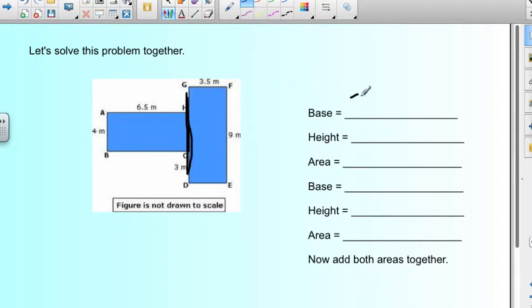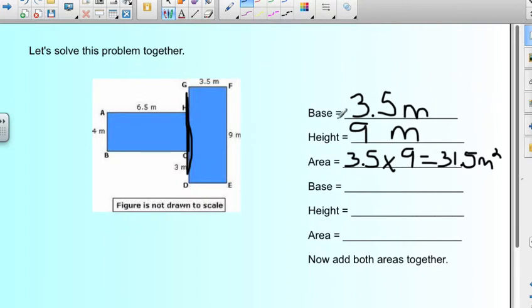The base is, yep, you've got it, it's 3.5. And it's meters. So we're going to label that. The height is right here. It's 9 meters. So what you would do is you would multiply 3.5 times 9 meters equals 31.5 meters squared. So I'm going to make sure I label it meters and the little squared symbol. Now, we have that figure figured out.